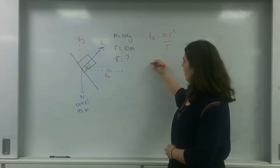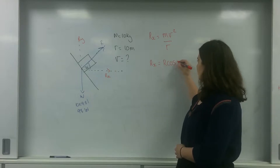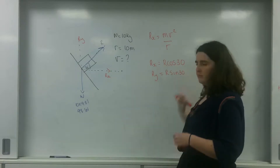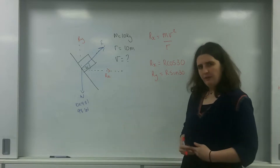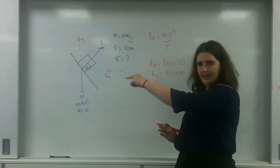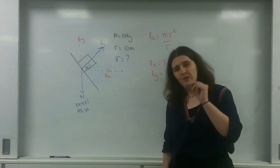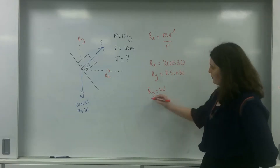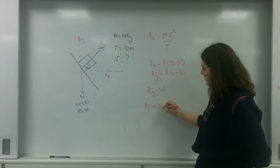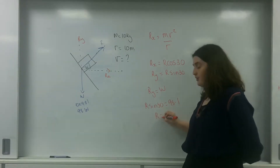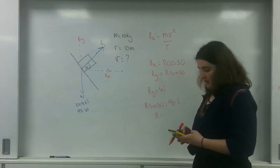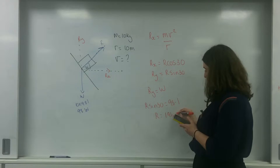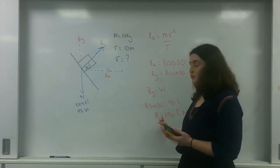I know that Rx is R cos 30 and Ry is R sin 30. This object is not moving up or down — it's staying in a constant circle — so I must be in vertical equilibrium. That means Ry must equal the weight. So R sin 30 equals 98.1, which gives a reaction force of 98.1 divided by sin 30, which is 196.2 Newtons.